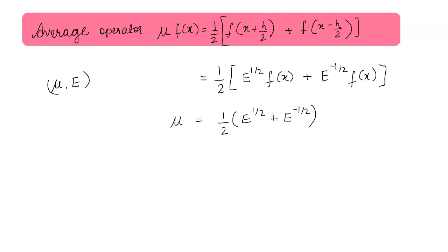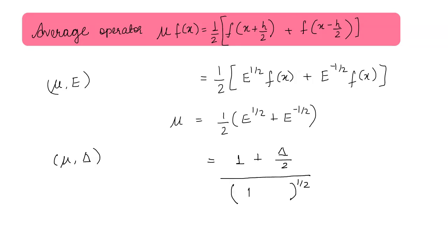Now let us move on to our next relation, that is between mu and the forward difference operator. This value is going to be equal to 1 plus Δ/2 divided by the square root of (1 + Δ).